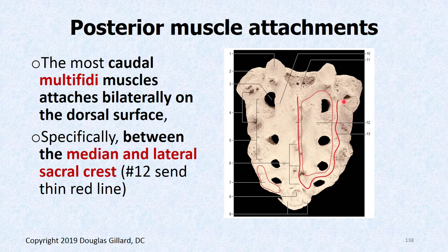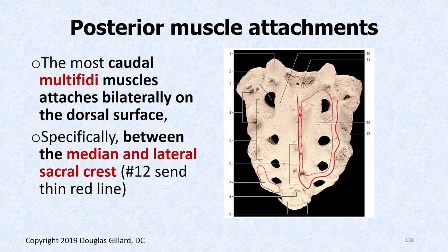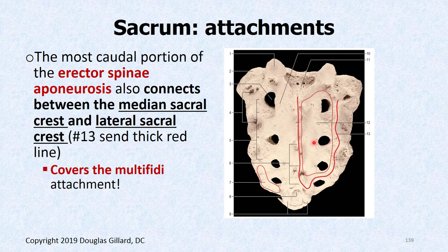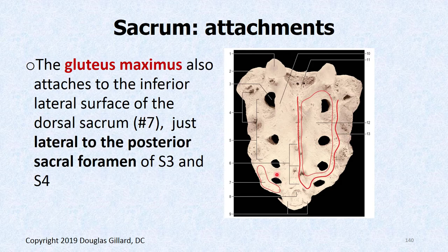The caudal-most fibers of the multifidi plug into the back of the sacrum between the median and lateral sacral crests, covering the intermediate sacral crest and the posterior sacral foramina. The erector spinae aponeurosis covers over the top of them, also connecting between the median and lateral sacral crests. Gluteus maximus also attaches to the sacrum at S3–S4 over the lateral sacral crest.